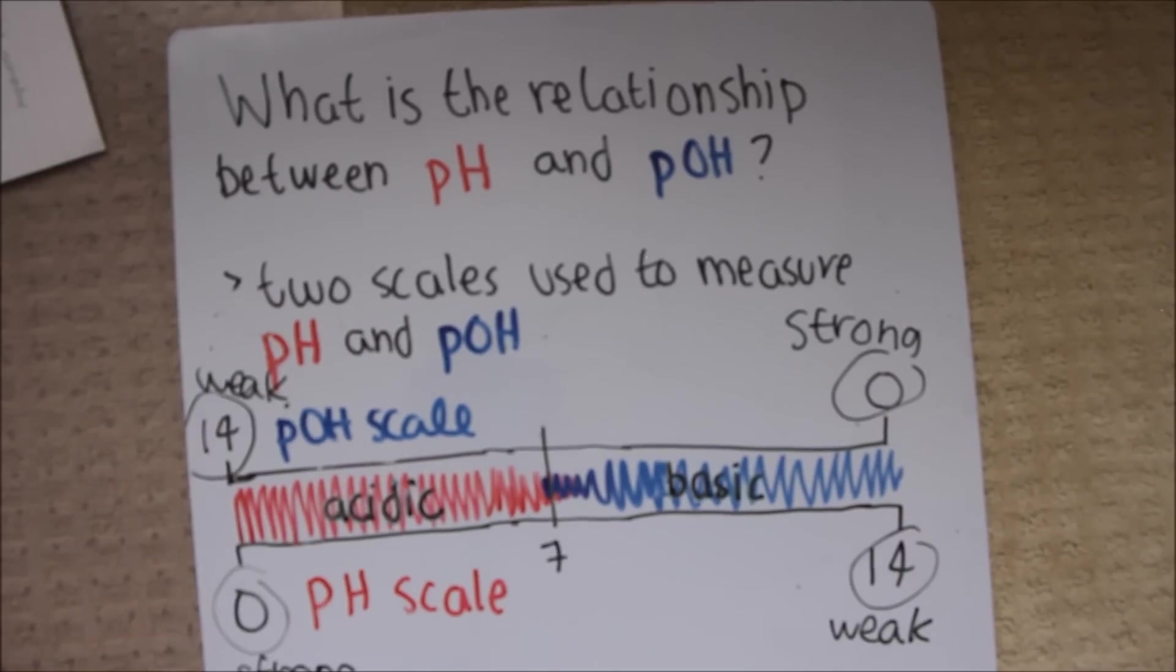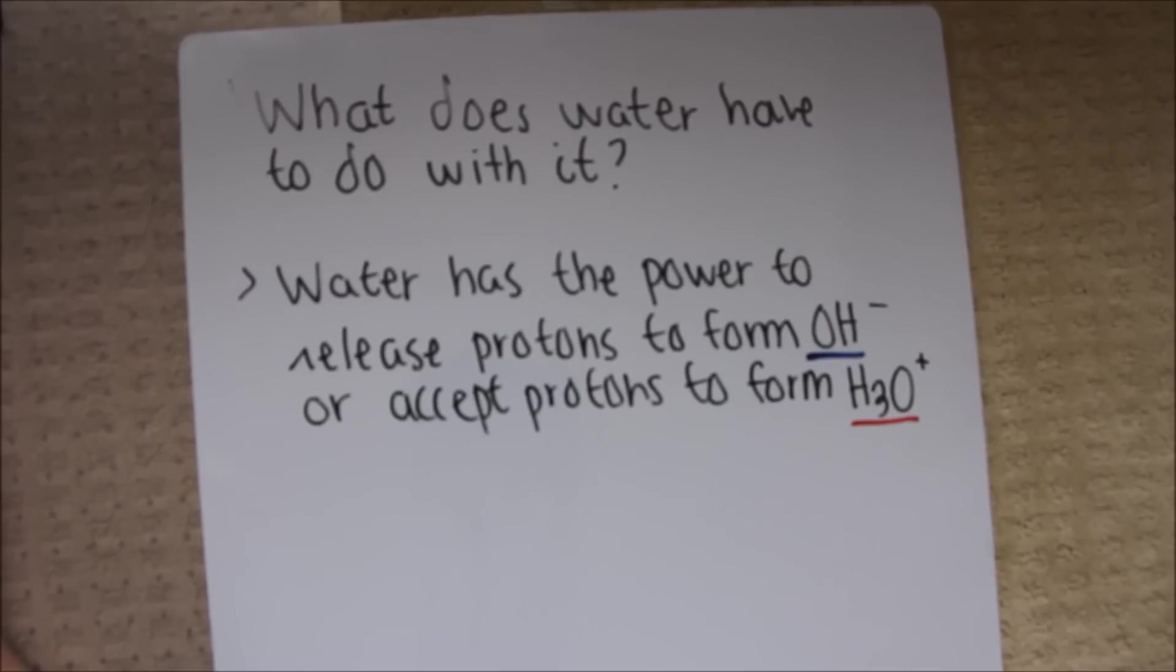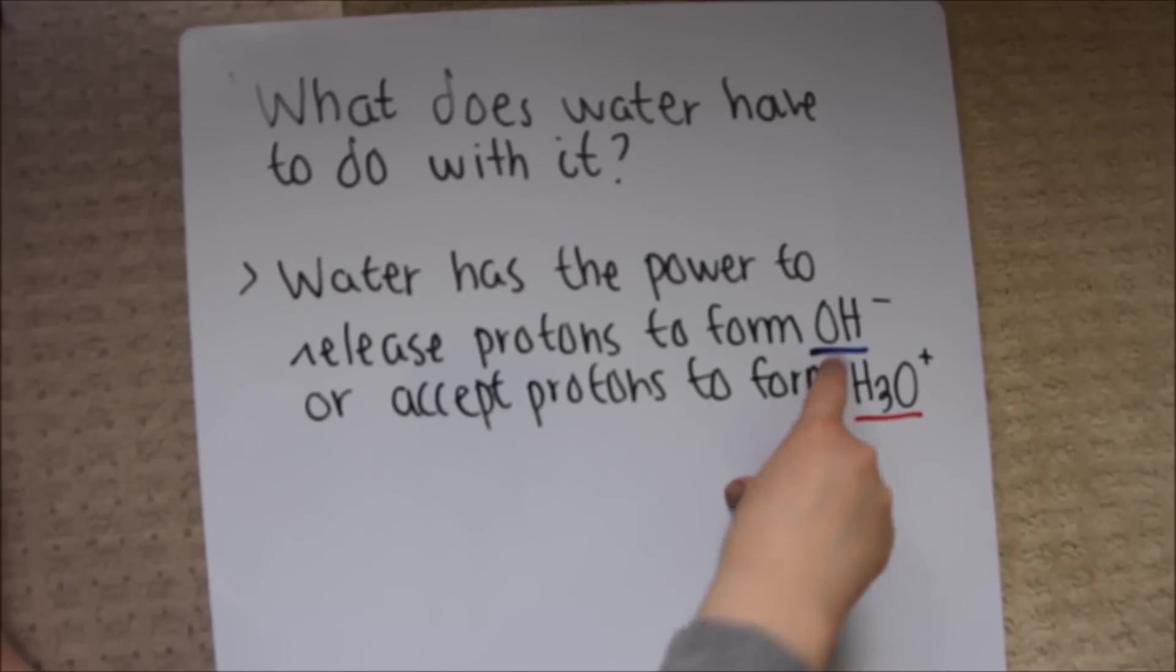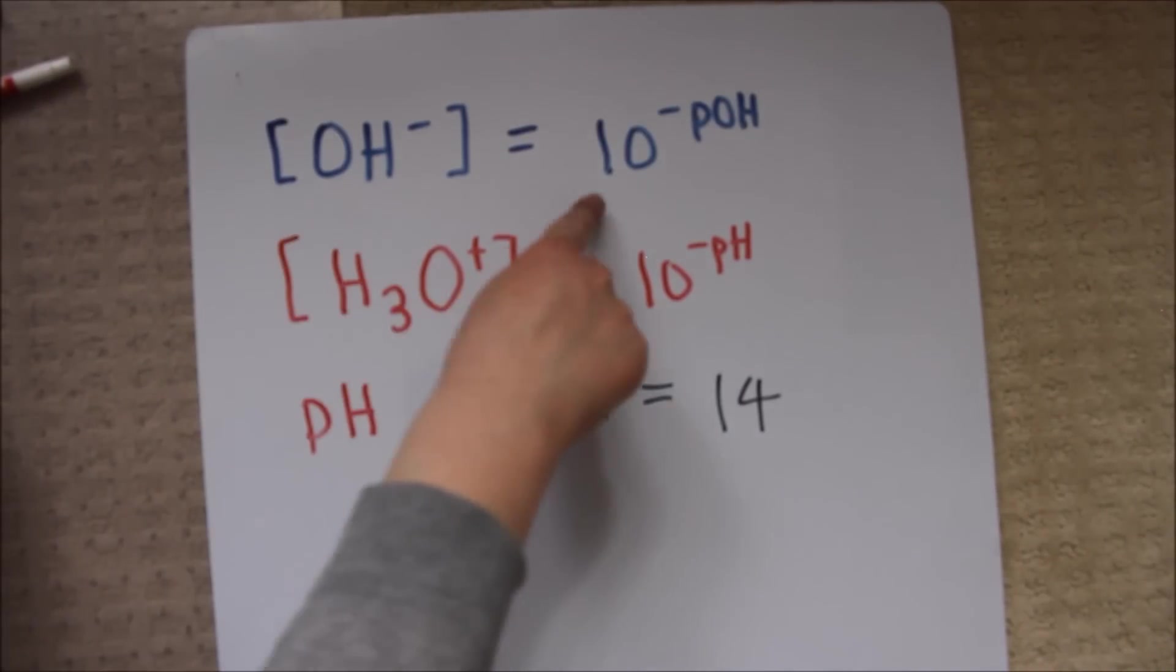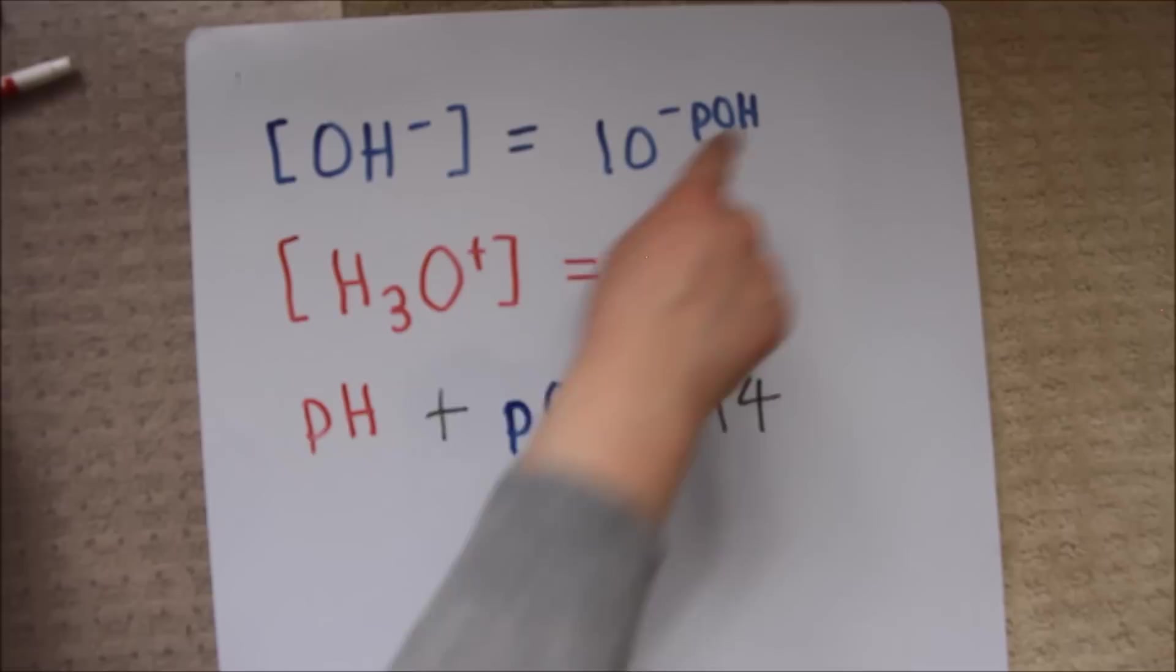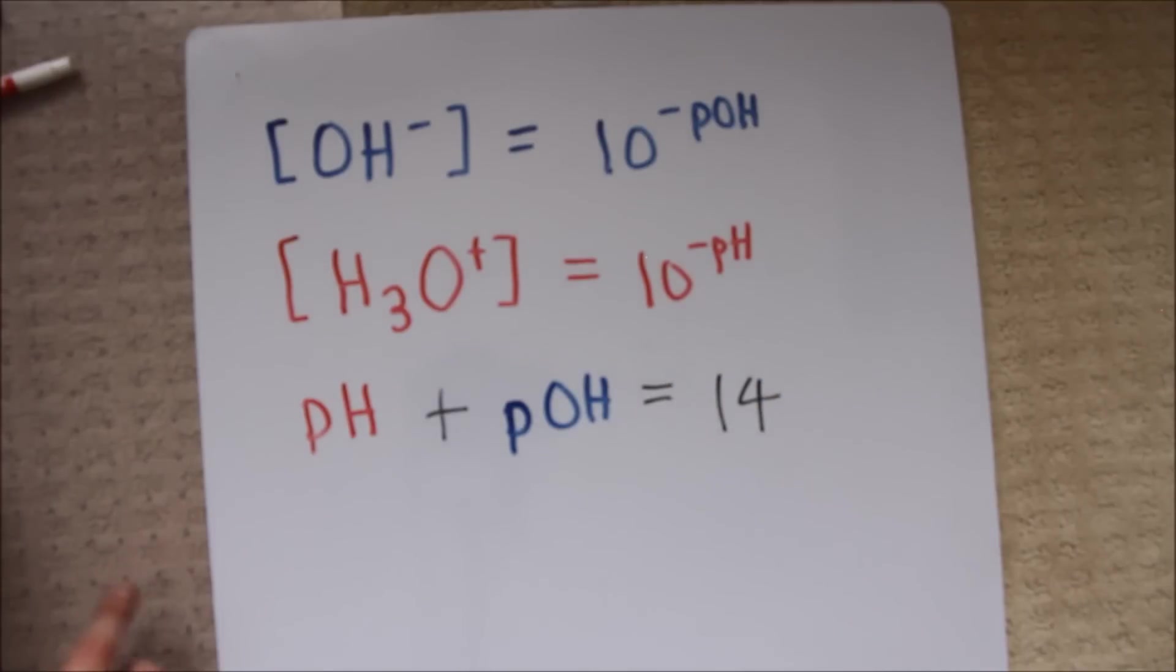As you can see, both of these scales are centered around water, which is neutral at the number 7. What does water have to do with it? Water has the power to release protons to form OH- or to accept protons to form H3O+ or hydronium. Some more formulas to memorize are that mathematically OH- is represented by 10 to the negative pOH, hydronium is represented by 10 to the negative pH. Additionally, the pH plus the pOH of any given substance will always equal 14.